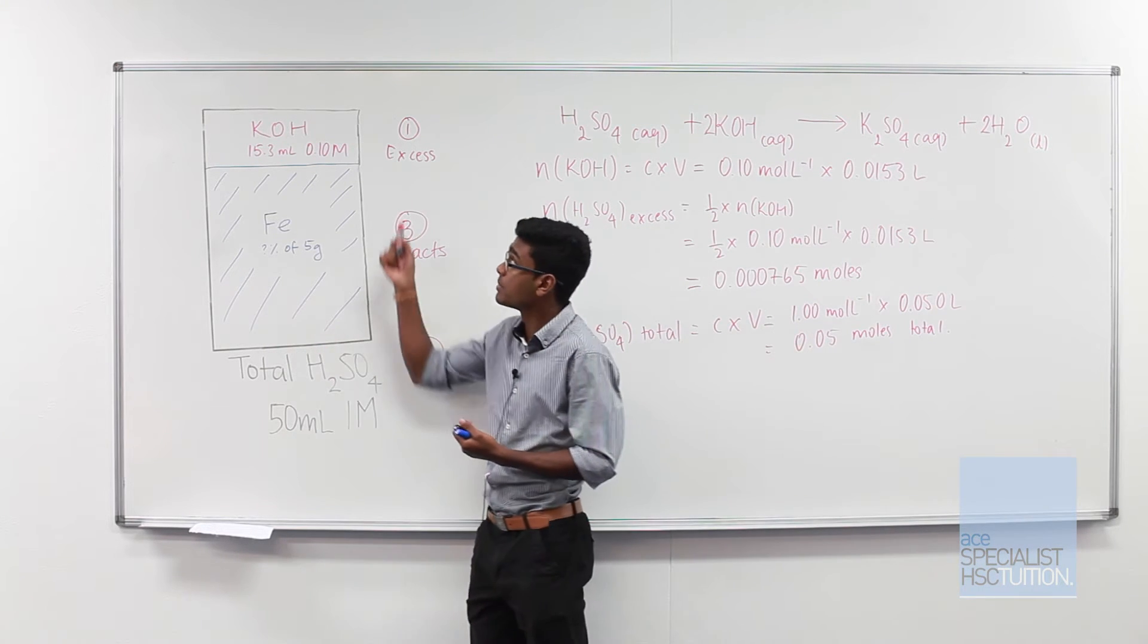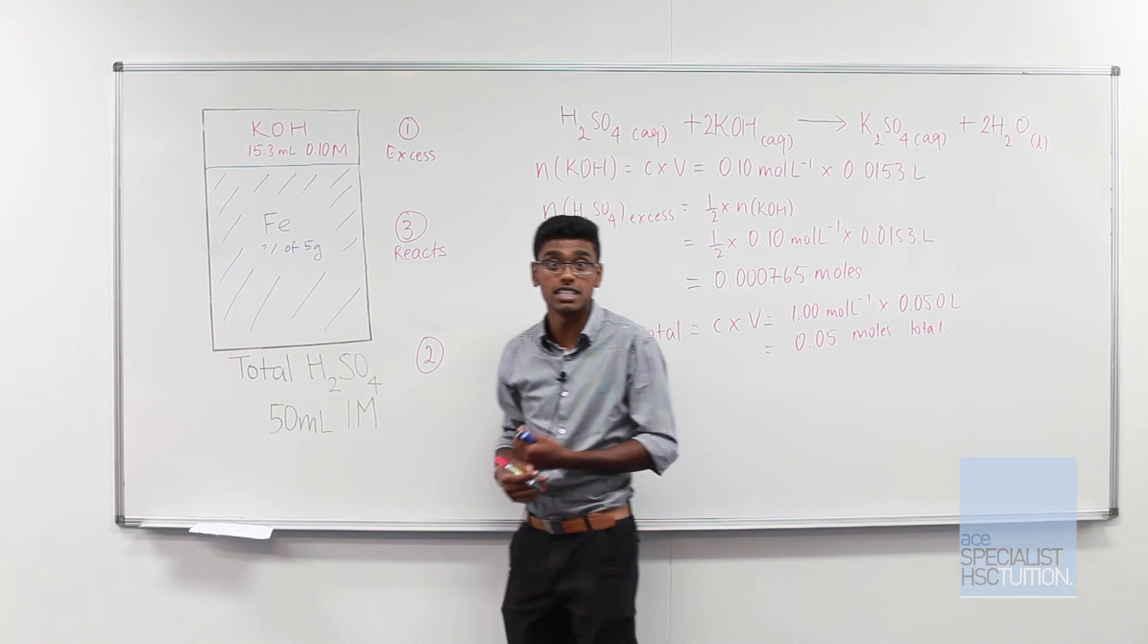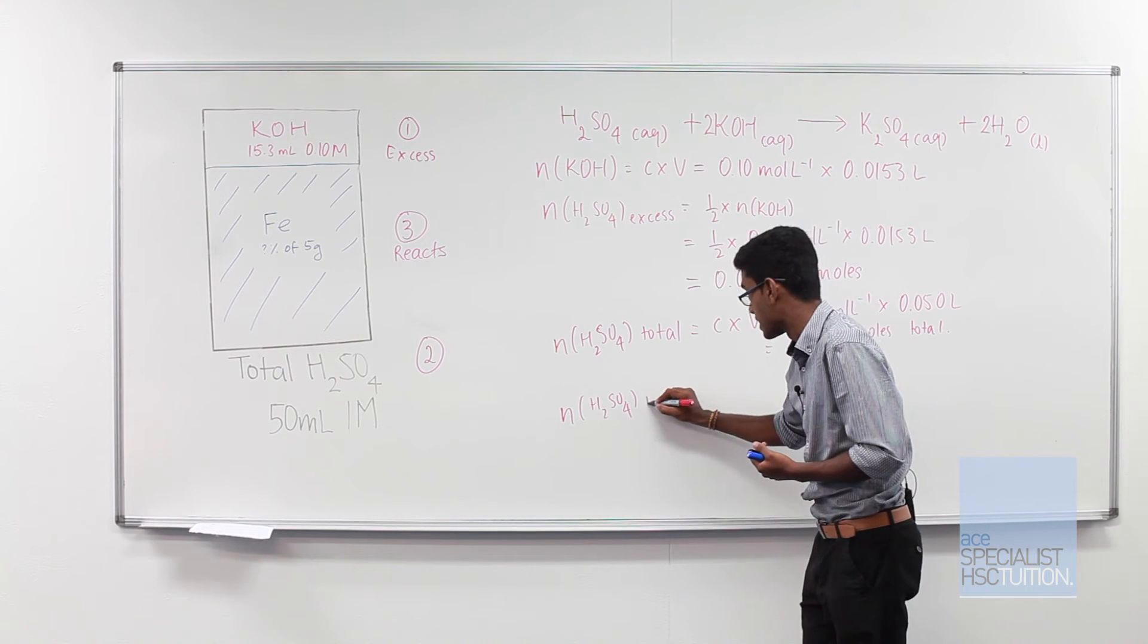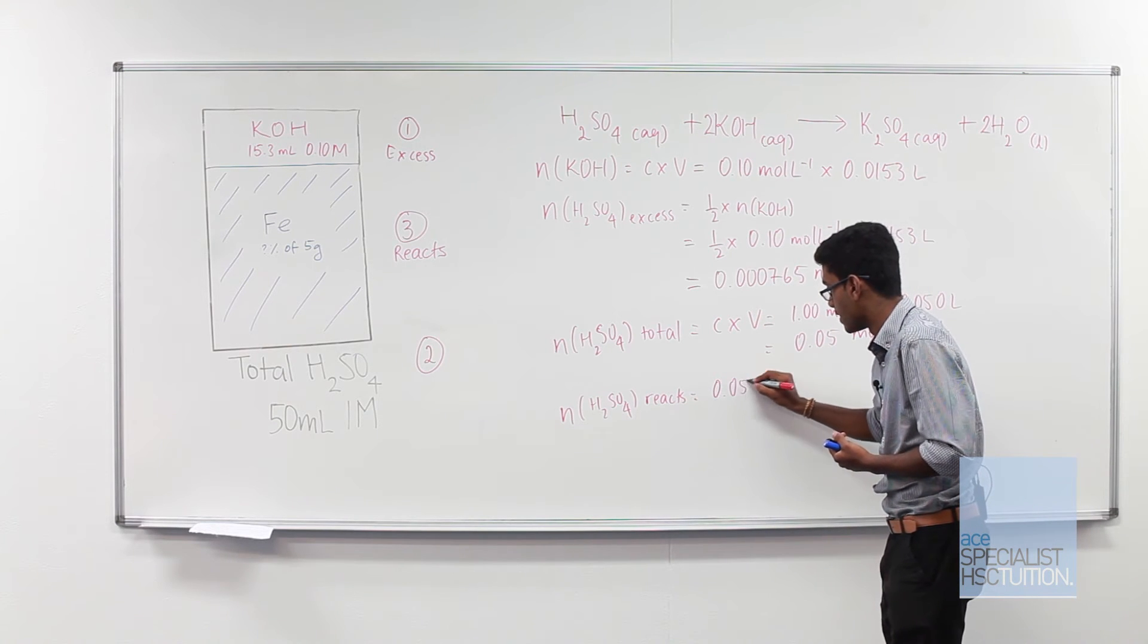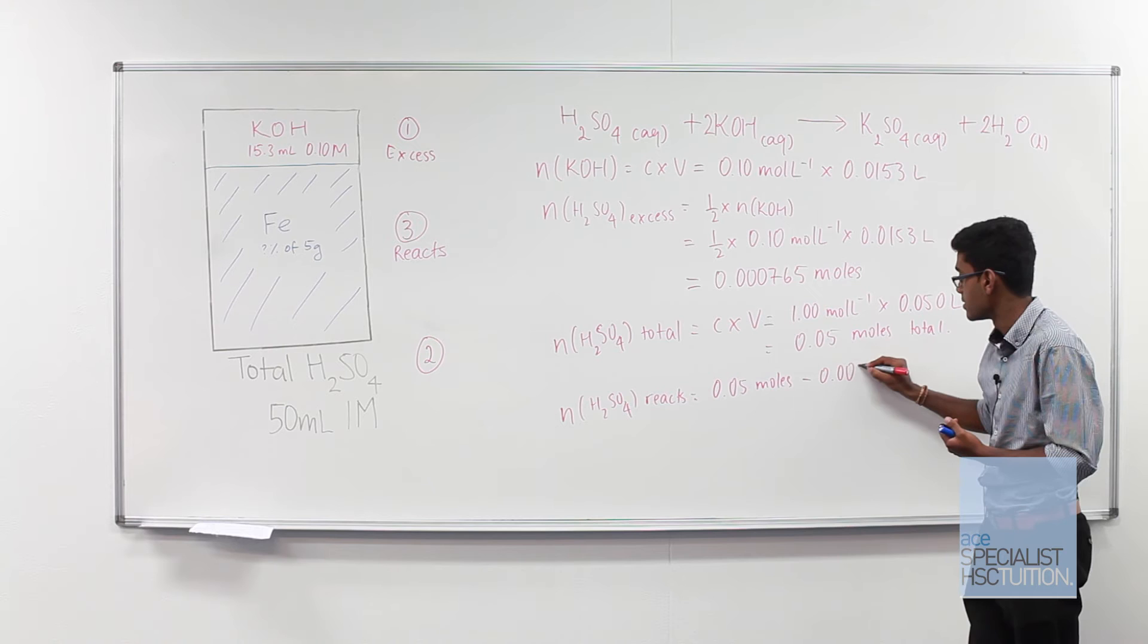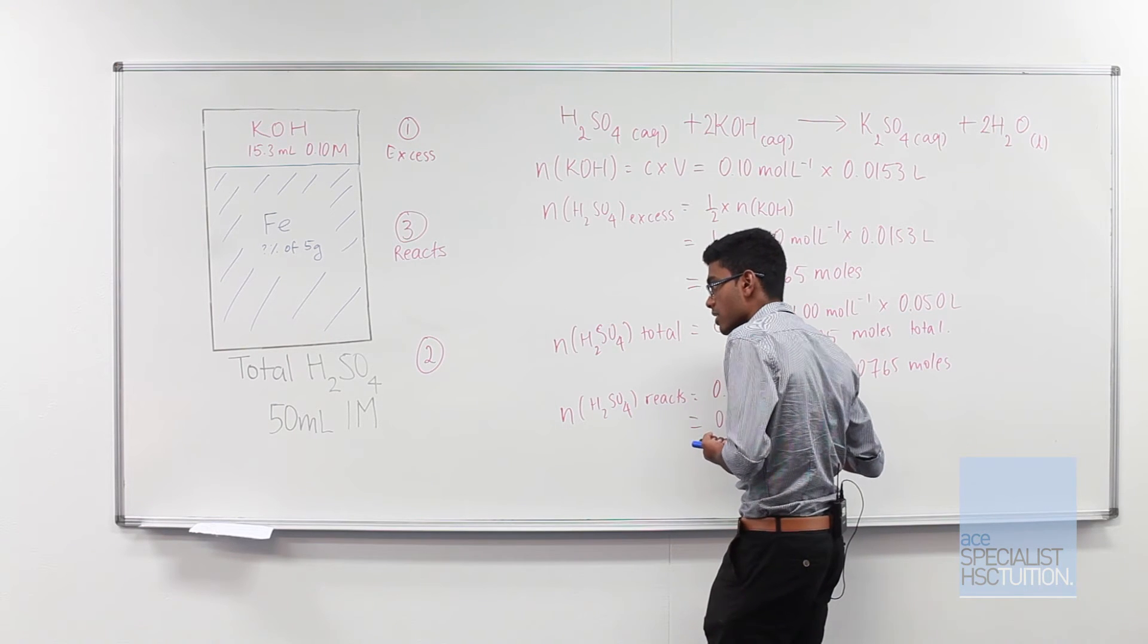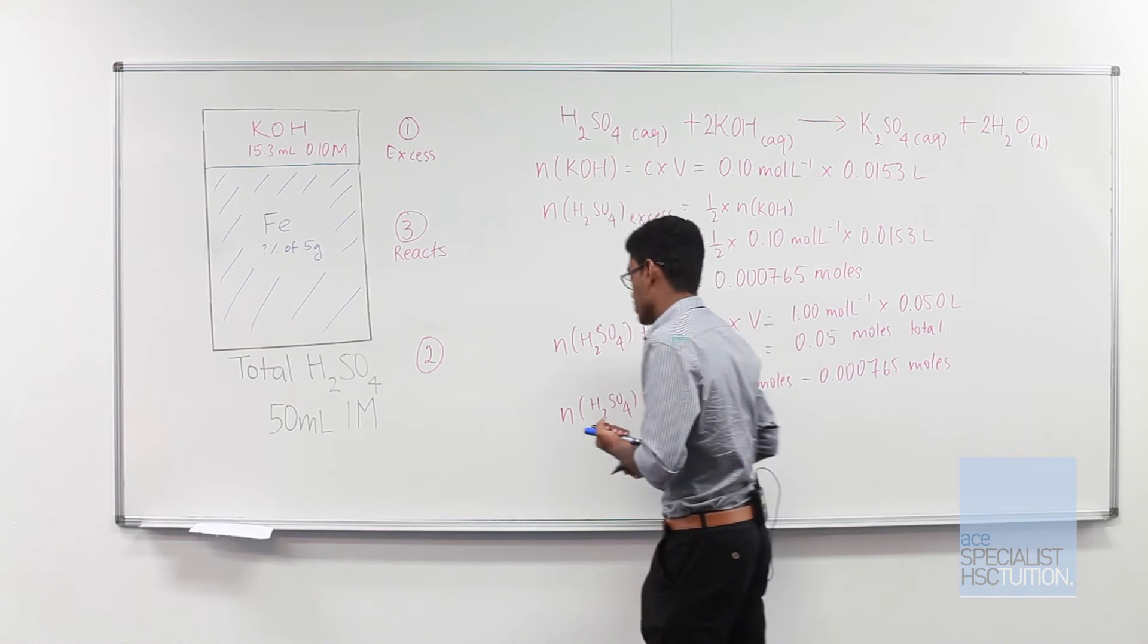So we know how much sulfuric acid we have in total. We also know how much sulfuric acid was in excess. So we can work out how much sulfuric acid actually reacted by working out the difference between those two values. So number of moles of sulfuric acid that reacts is equal to the total, so 0.05 moles minus 0.000765 moles. And that gives us a value of 0.049235.